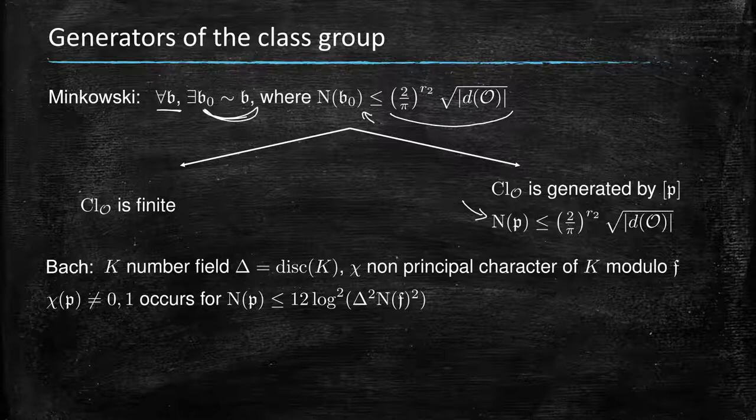...less than 12 log squared delta, but also if you're working modulo conductor f, then this goes in here, but if you're looking at...